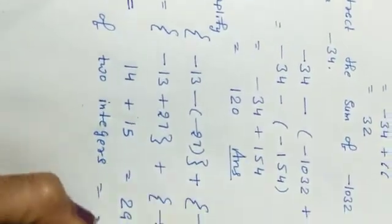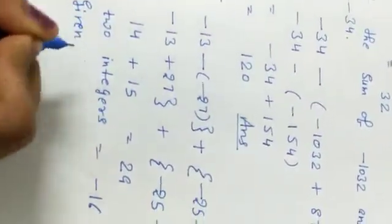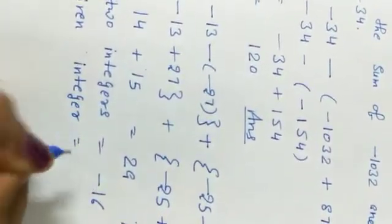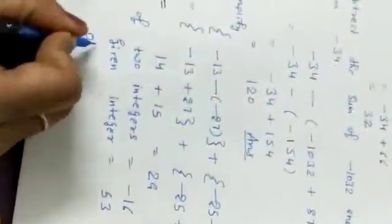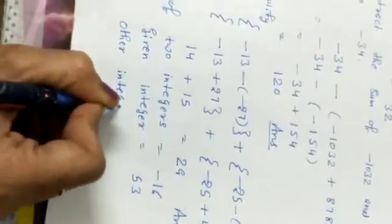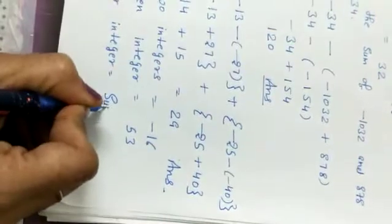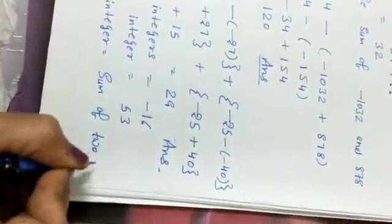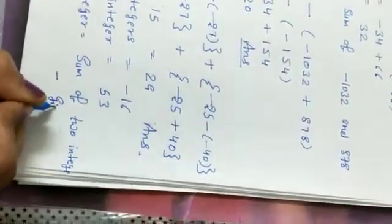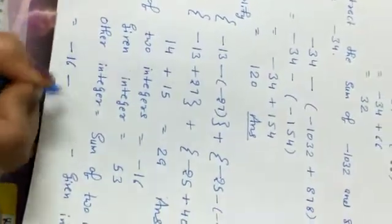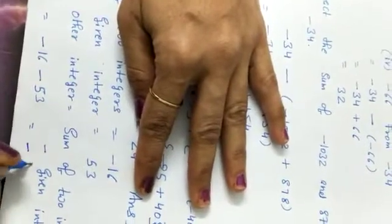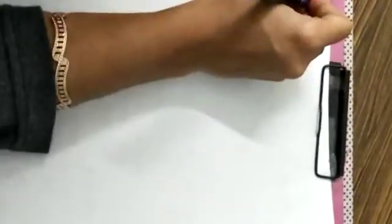Next question: the sum of two integers is given as -16, and one integer is given as 53. To find the other integer, use: other integer = sum minus given integer = -16 minus 53 = -69. That is your answer.